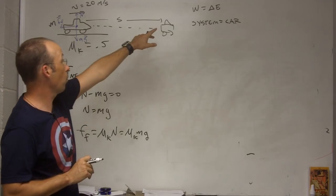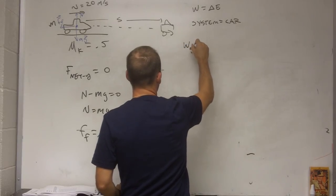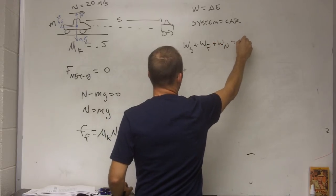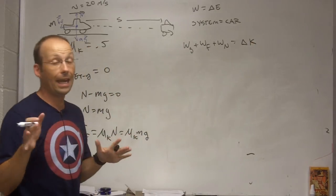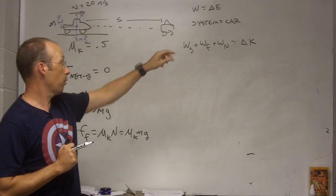So now I need to do the work done on the car. Let me just say that, write that as work done by gravity plus work done by friction plus work done by the normal force equals just a change in kinetic energy. If it's just the car, it can't have potential energy. It only has kinetic. So, I need to look at these three works.